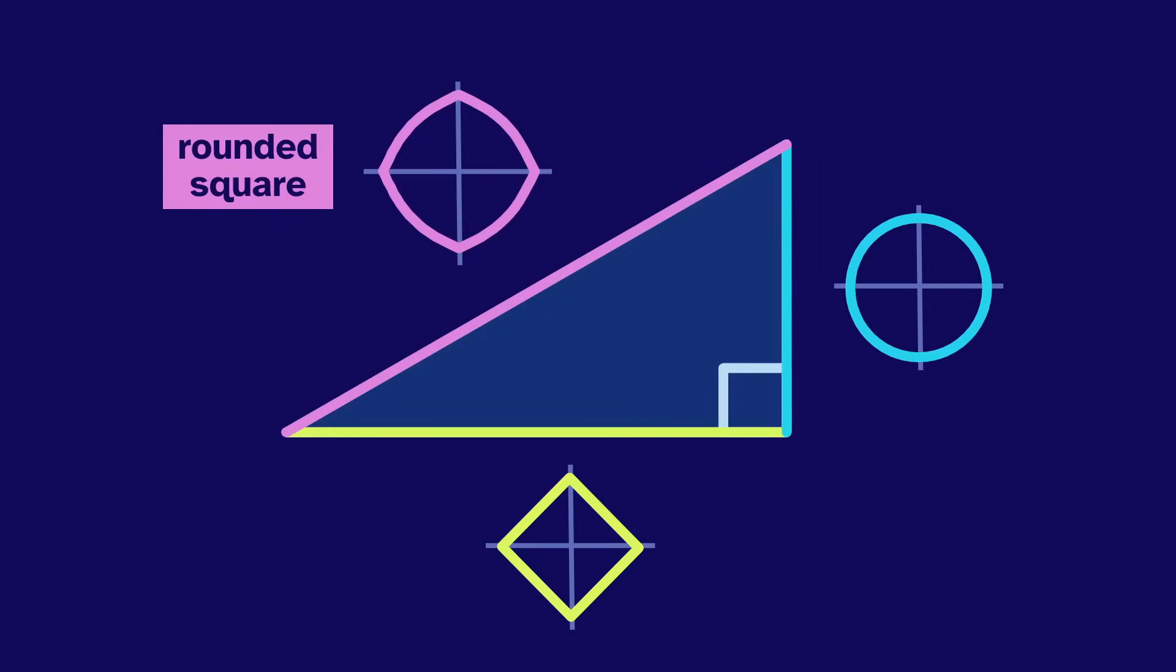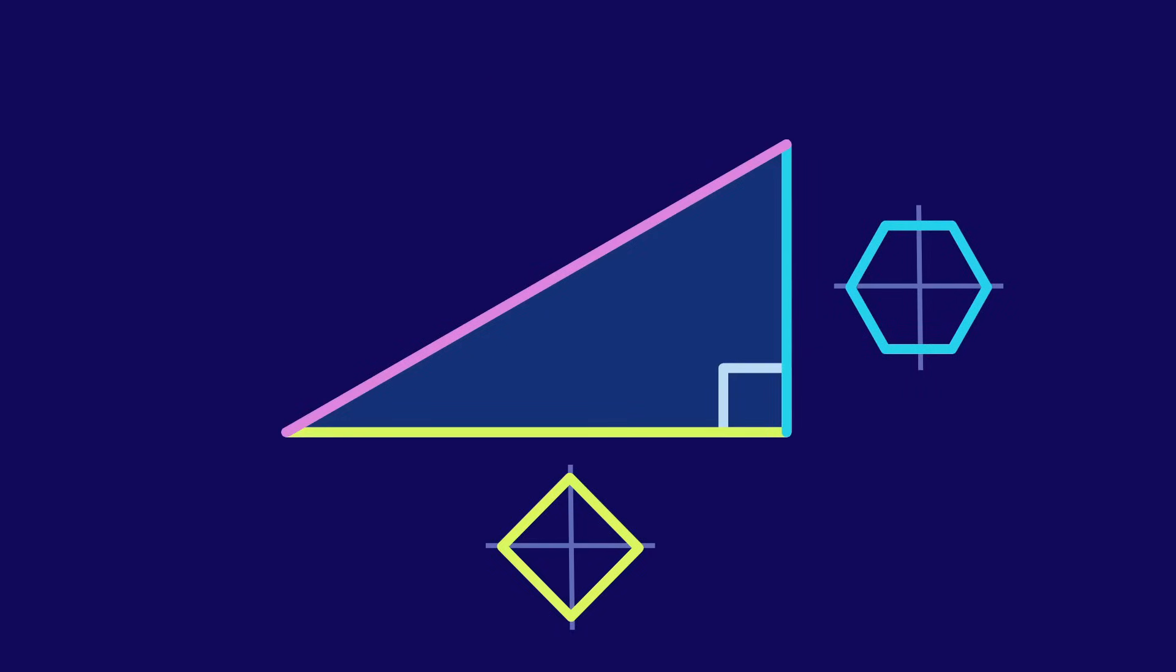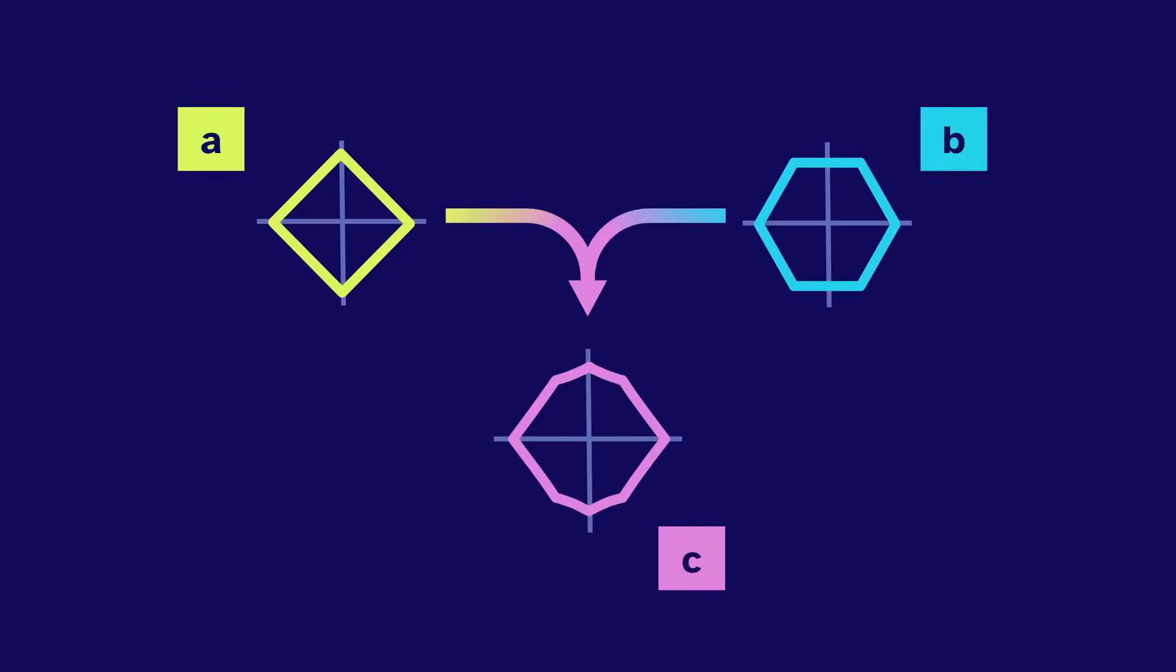If we switch B to a hexagon, we get this for C. C is always a mix between the A and B shapes.